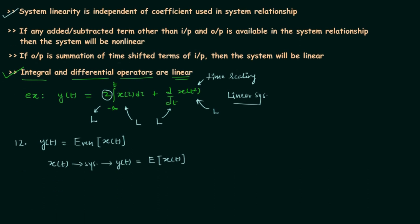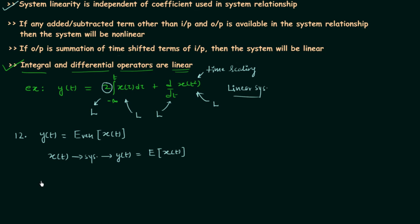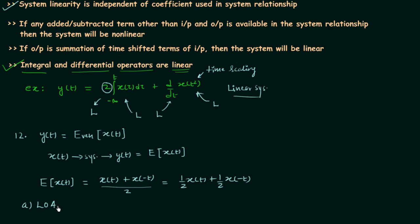To find out the nature of the system, we will first use the formula of the even component. The even component of signal x(t) is equal to [x(t) + x(−t)] / 2, which we can write as (1/2)x(t) + (1/2)x(−t). Normally we would check the law of additivity and law of homogeneity, but since we have already derived the key properties, we will use those properties instead.